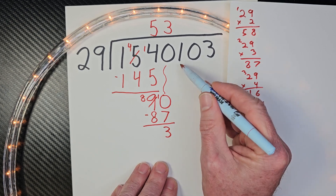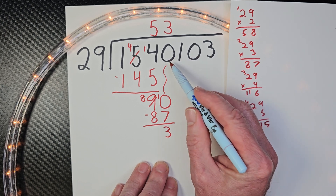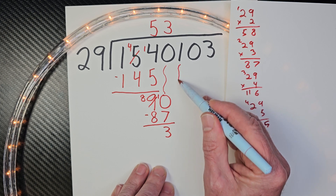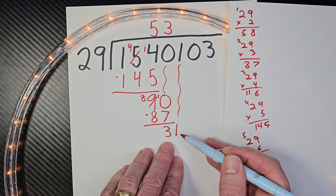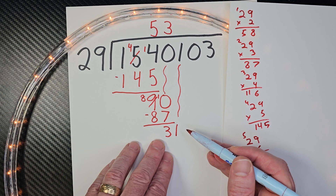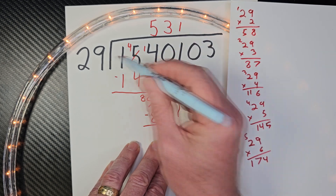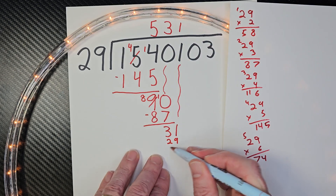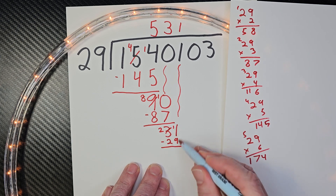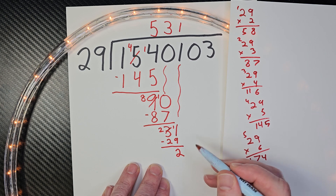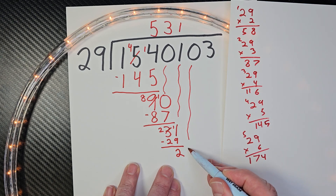And then I drop the next number down. I like making these squiggly lines — that way I'm able to keep track of such a big number. I'm going to bring that all the way down here. I drop the 1 all the way down, so I have 31. Can I put 29 into 31? Yes, but only one time. So I put 1 right here. 1 times 29 is 29. I need to borrow here — this will be a 2, this is 11, 11 minus 9 is 2.